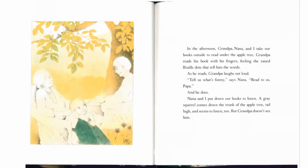In the afternoon, grandpa, Nana and I take our books outside to read under the apple tree. Grandpa reads his book with his fingers, feeling the raised braille dots that tell him the words. As he reads, grandpa laughs out loud. Tell us what's funny, says Nana. Read to us, Papa. And he does. Nana and I put down our books to listen. A grey squirrel comes down the trunk of the apple tree, tail high, and seems to listen too, but grandpa doesn't see him.